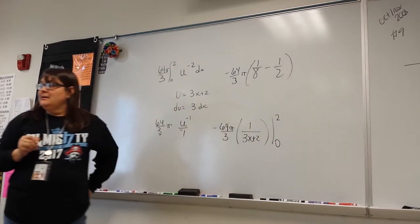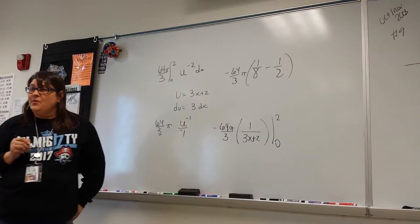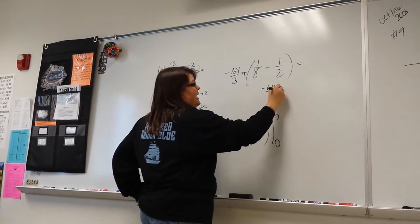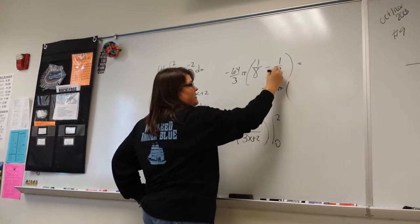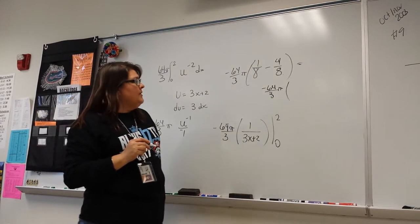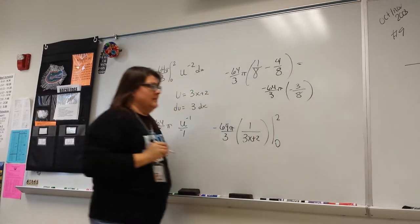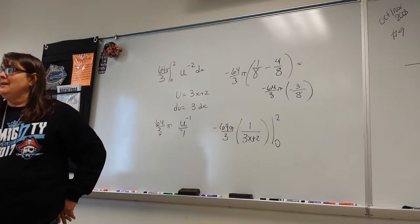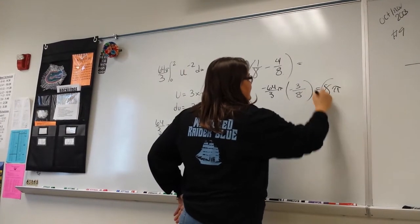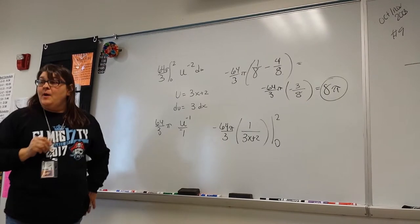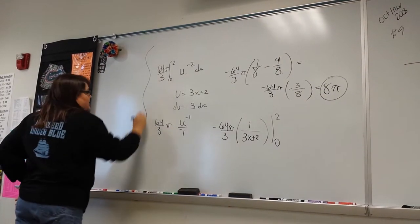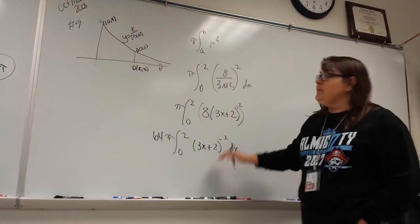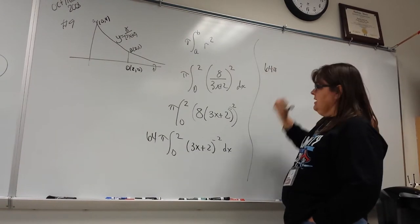Get a common denominator: four over eight. Negative 64 pi over three times negative three eighths — two negatives make a positive, threes cancel, and 64 divided by eight is eight — so the answer is 8 pi. And that's what they told us the answer should be. Now as promised, I'll show the other way: the integral of (3x plus 2) to the negative two is (3x plus 2) to the negative one over negative one, divided by the derivative of the inside which is three.